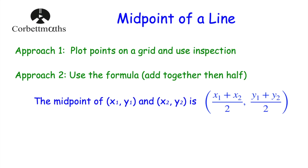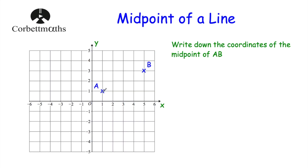Let's have a look at a typical question. We've got point A at (1, 1) and point B at (5, 3), and we want to find the midpoint of line AB. If we join them up and use inspection, we can look at the line and see straight away that the midpoint would be at (3, 2), because it's in the middle of the line AB. You could also use a ruler — the line is 4 centimetres and the midpoint is at 2 centimetres.